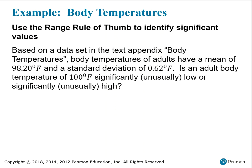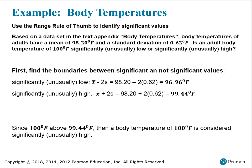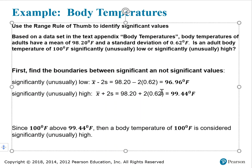Here's an example. Based on a data set in the text appendix, body temperatures of adults have a mean of 98.2 degrees Fahrenheit and a standard deviation of 0.62 degrees Fahrenheit. The question is: is an adult body temperature of 100 degrees Fahrenheit significantly or unusually low, or significantly or unusually high? To determine that, first we find the boundaries between significant and not significant values.